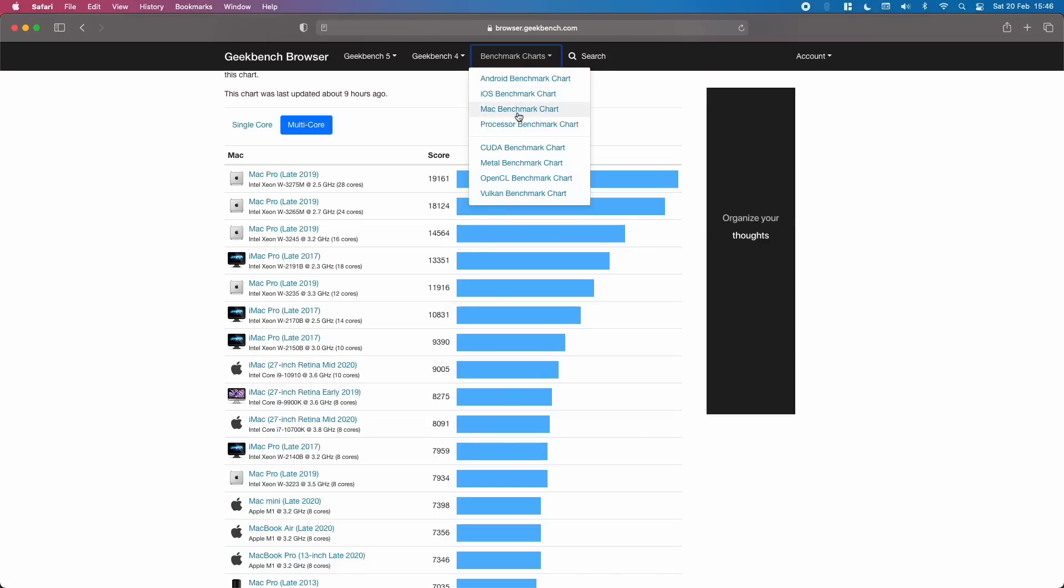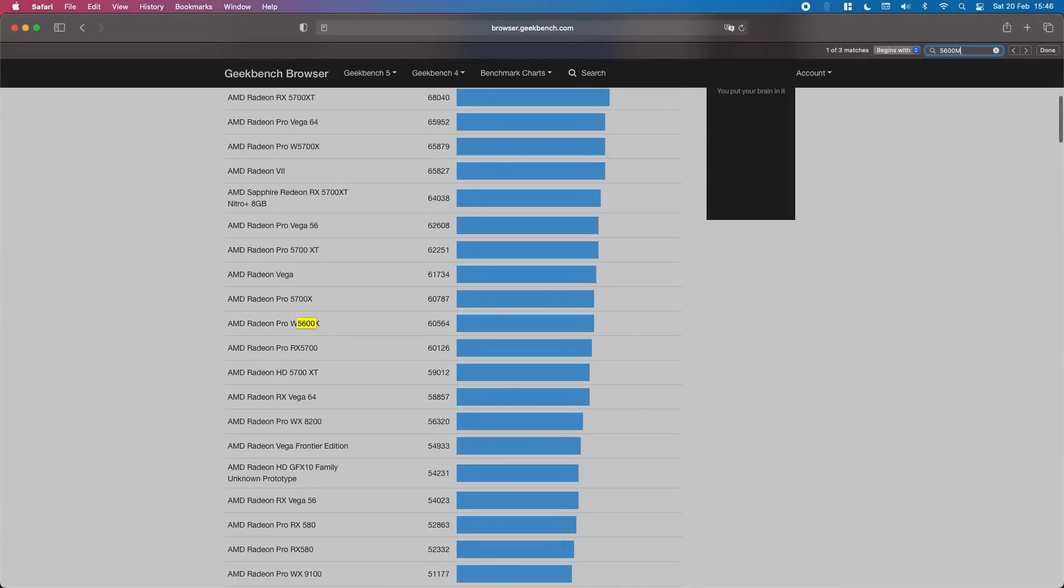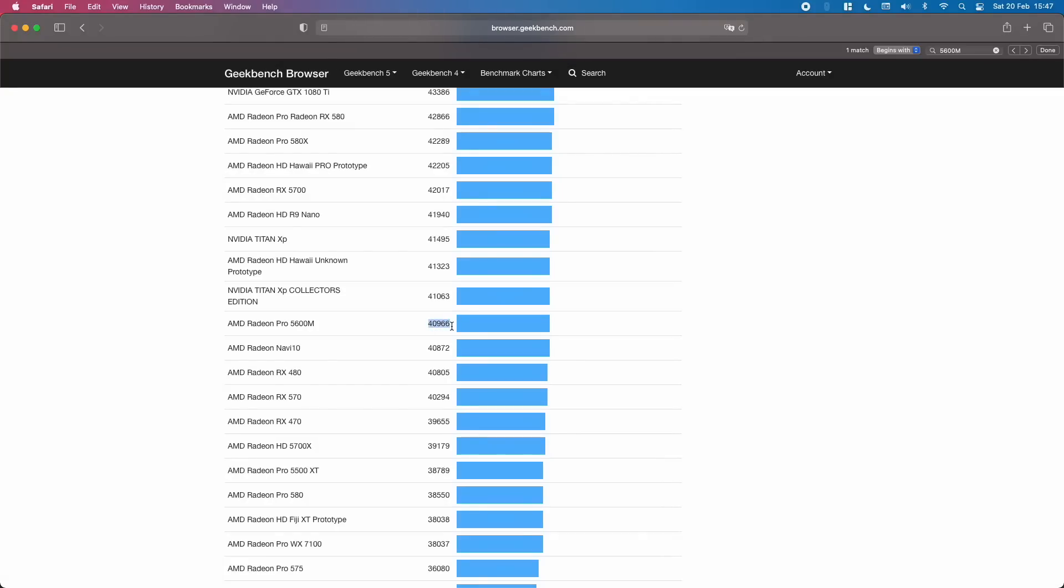So for our theoretical argument's sake, what if we could double that score to 43,964? How would that compare to the top GPU in the 16-inch Intel MacBook Pro? Well let's consult Geekbench's Metal benchmarks chart. And here we can see that the average score for the 5600M GPU is 40,966. So we can probably conclude that if Apple can double the GPU cores, then they'll have a chip that can go into a new 16-inch MacBook Pro and perform at least as well as the best GPU option available for the previous model, the Intel model.